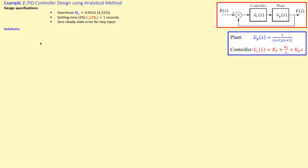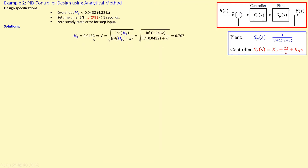For finding the required controller using the analytical method, I need the design point — its real and imaginary parts. Starting with the overshoot, expressed as a scalar rather than a percentage, I use the formula for zeta. Substituting the overshoot value of 4.32%, you get a damping ratio zeta of 0.707. That is the first parameter.